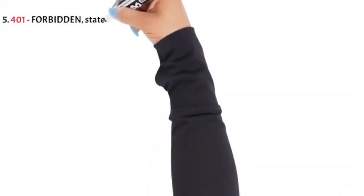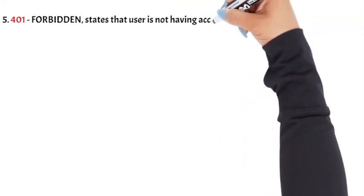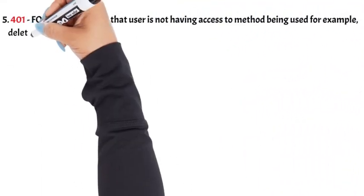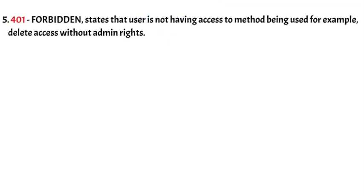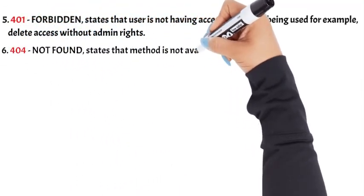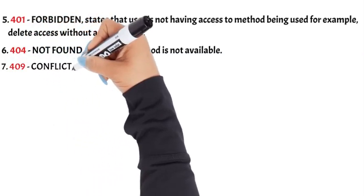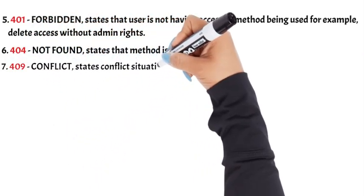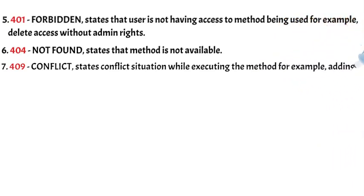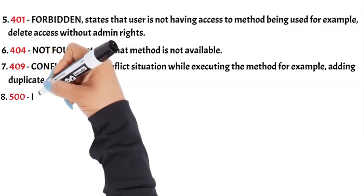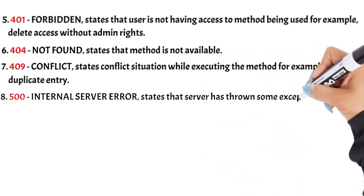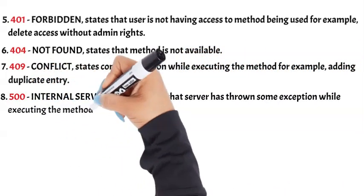5. 401 Forbidden — states that the user does not have access to the method being used, for example, delete access without admin rights. 6. 404 Not Found — states that the method is not available. 7. 409 Conflict — states a conflict situation while executing the method, for example, adding a duplicate entry. 8. 500 Internal Server Error — states that the server has thrown some exception while executing the method.